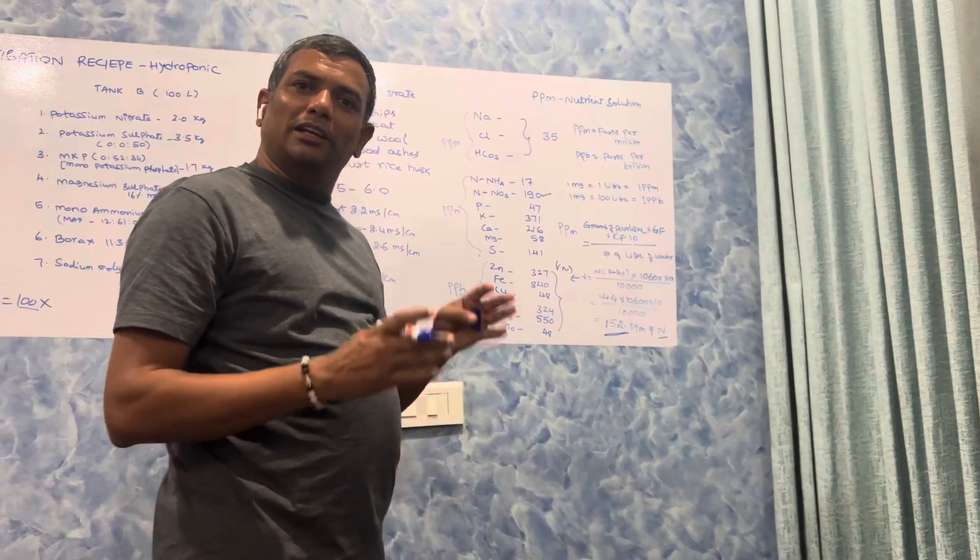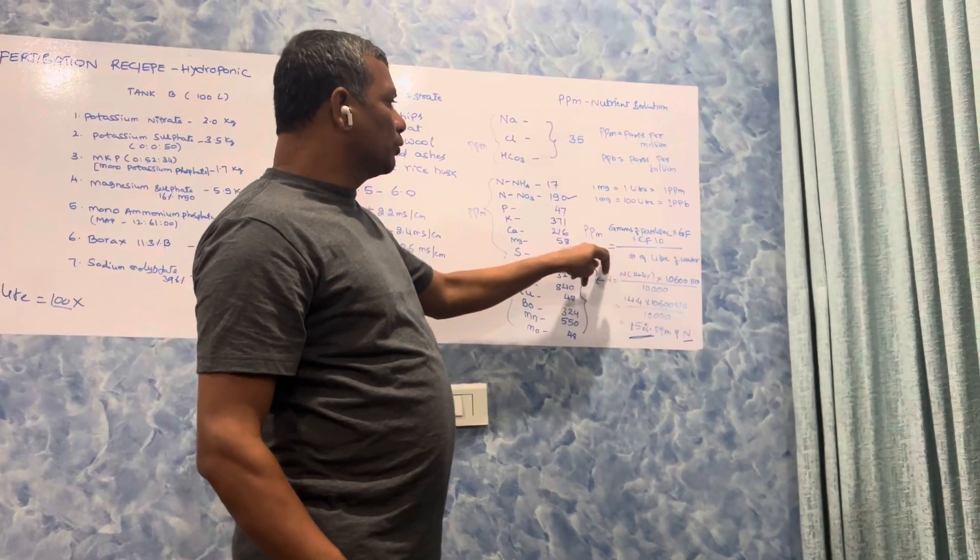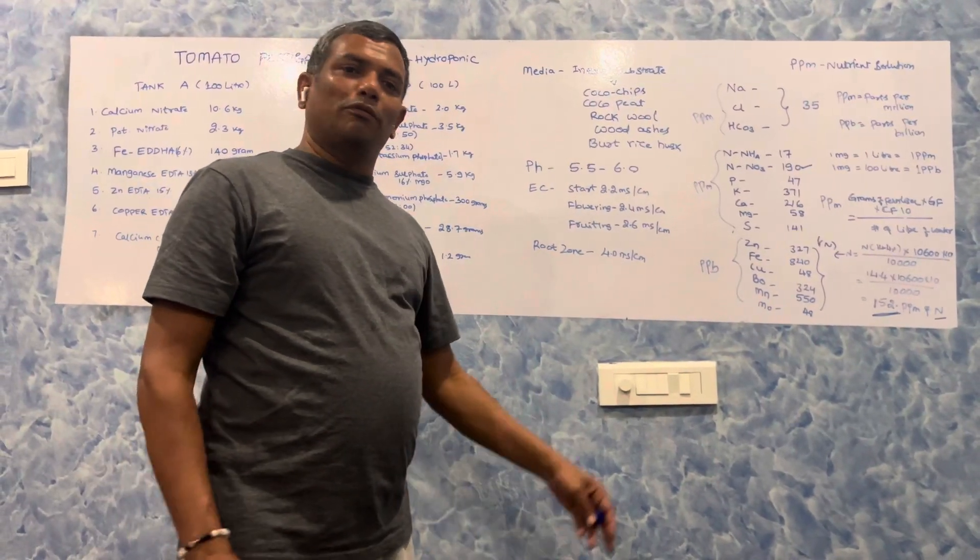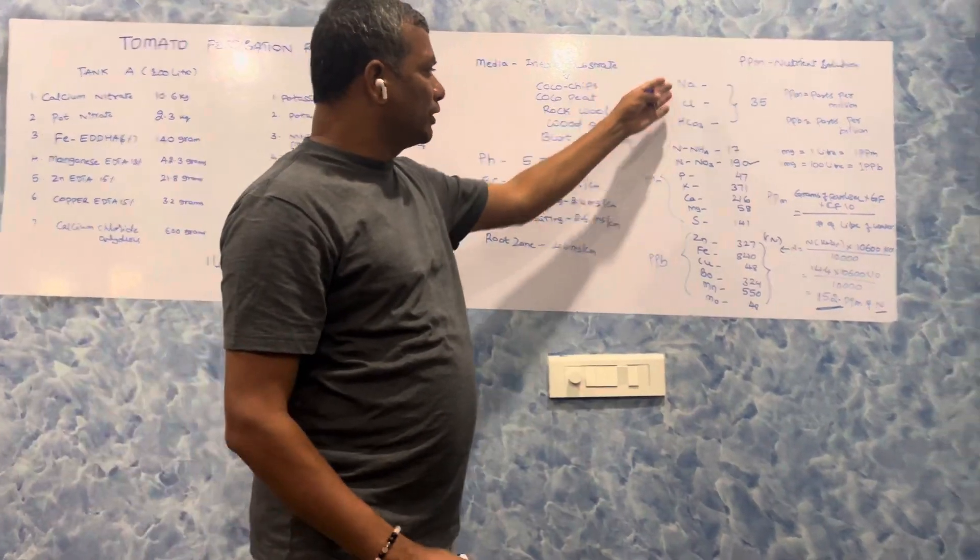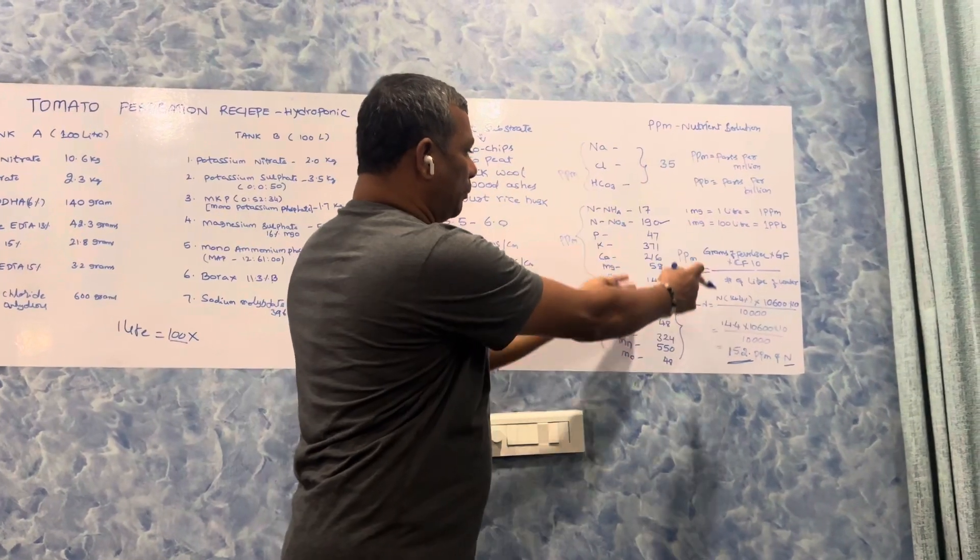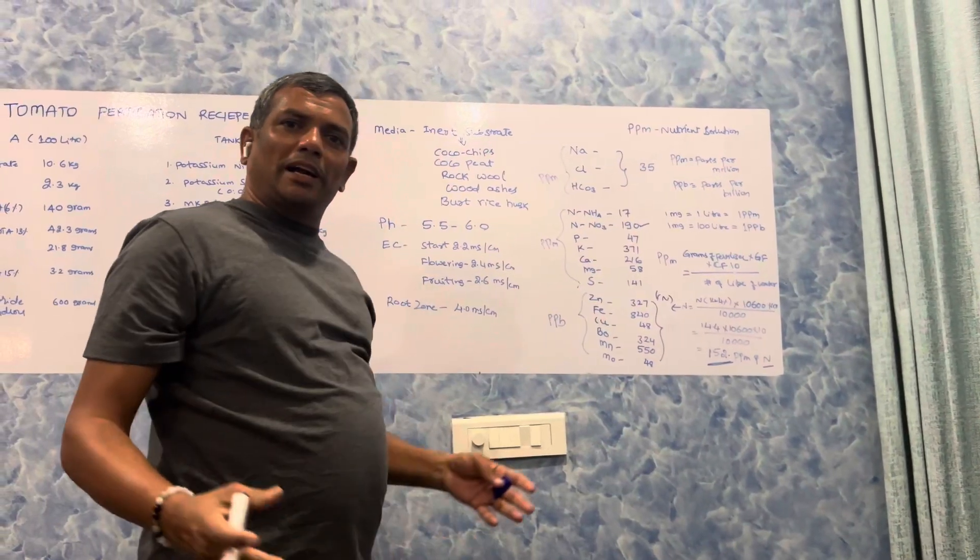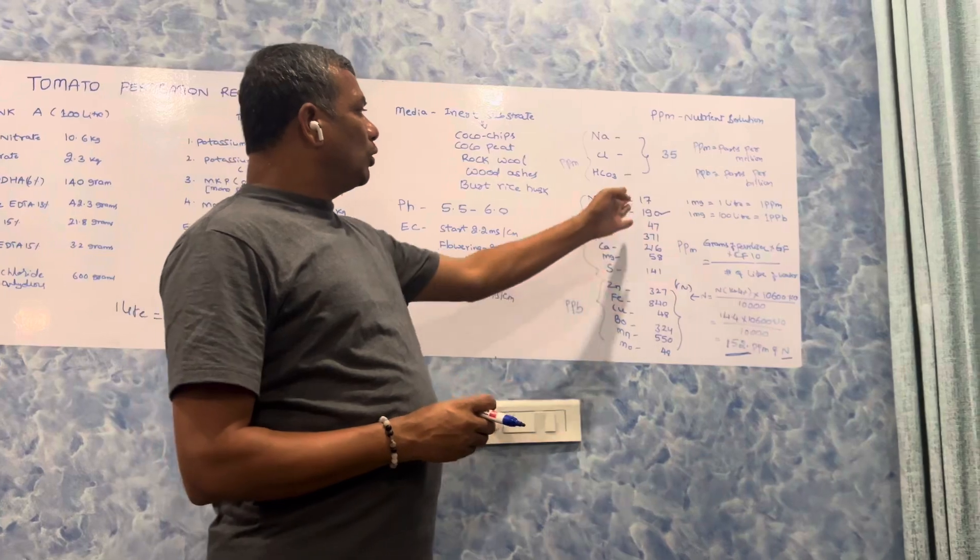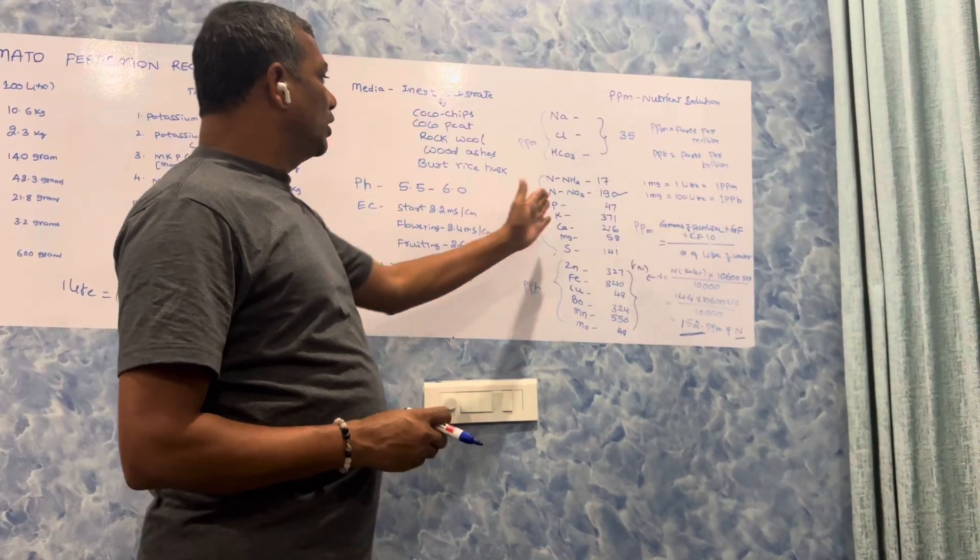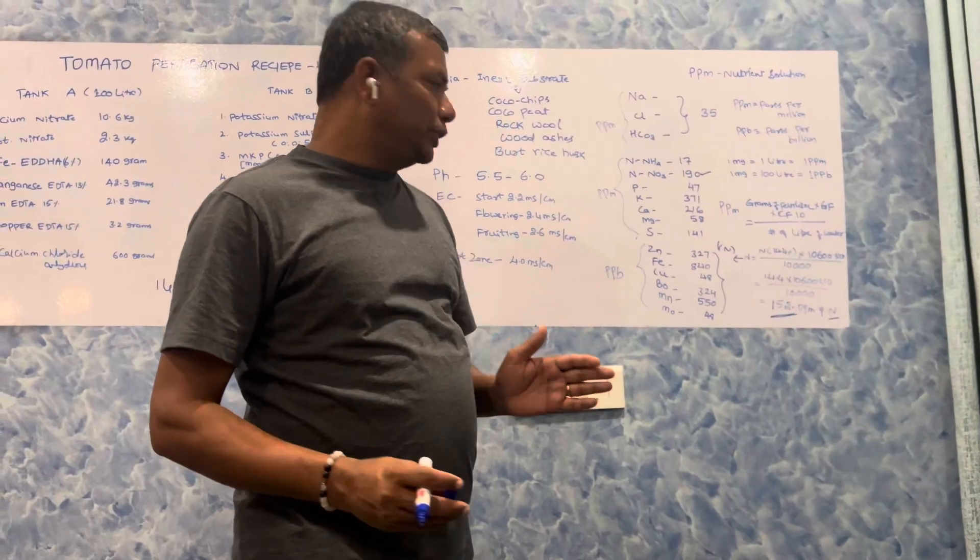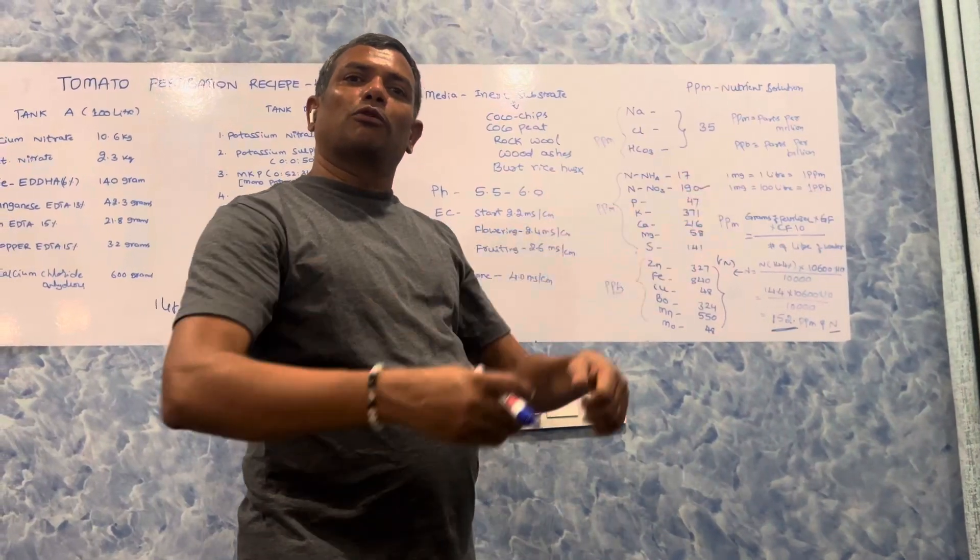We can easily calculate the PPM of all the 12 elements using this formula. This is the reference range of the PPM. This should be the range of PPM so that the plants can absorb all the nutrients without showing any deficiencies. Below these values, plants will show nutrient deficiency. Above this, we are going to lose a lot of money on fertilizer. That's why we have to maintain in the range of this PPM level.